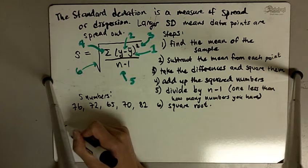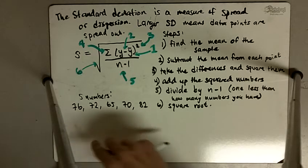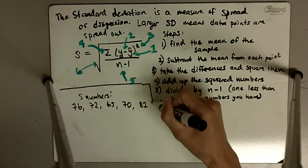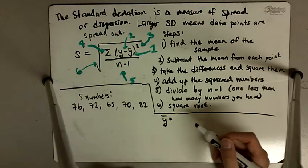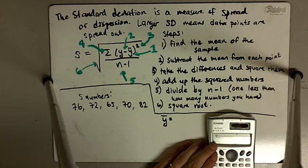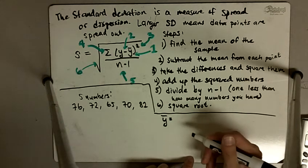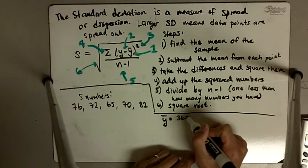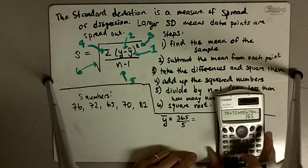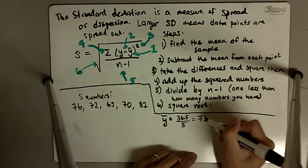So step 1 is to find the mean. The mean is given by y bar. Let me calculate the mean over here. The way we find this is we add up all of the numbers. So if I bring out my calculator and I do 76 plus 72 plus 65 plus 70 plus 82, the resulting number I get is going to be 365. To find the mean we take that sum and we divide by how many numbers we have. So I'm going to do 365 divided by 5. And so the mean I get is equal to 73.